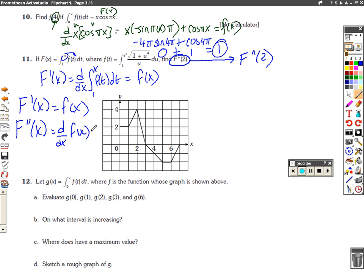Which, let me go ahead and write over here, is the derivative of the integral from 1 to t squared of root 1 plus u to the fourth over u du. And the fundamental theorem says, to evaluate this, I'm going to plug in t squared. So I've got the square root of 1 plus t squared to the fourth, which is t to the eighth over t squared, times the derivative of t squared, which is 2t.